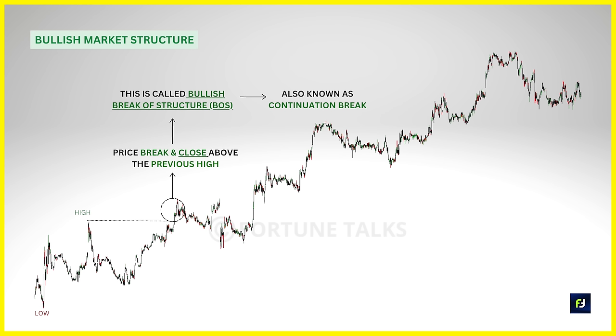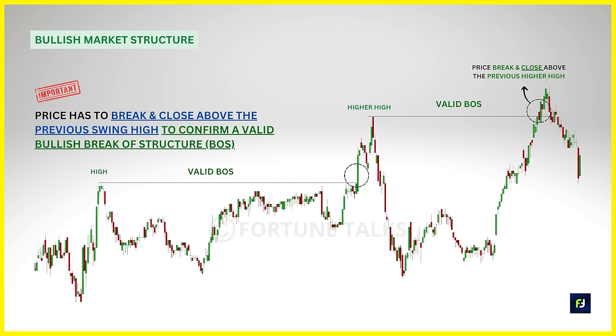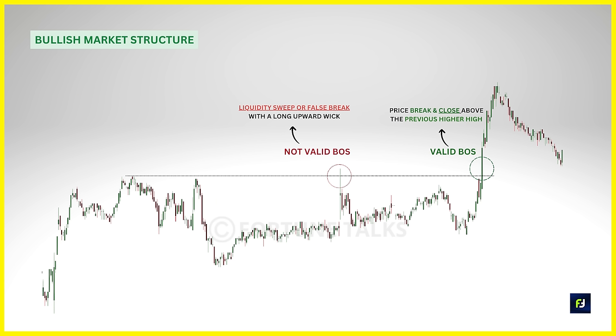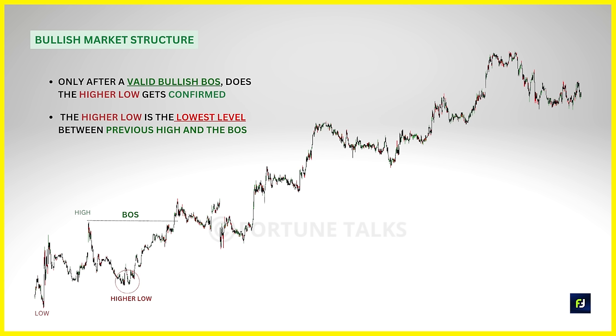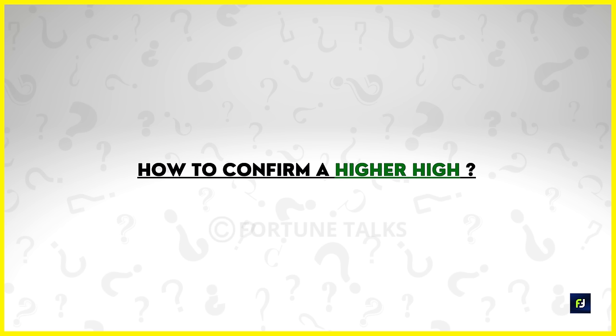When the market momentum is bullish, the market creates a low and a high, then the price makes a retracement or pullback, and once again the price moves higher and breaks and closes above the previous high. This is called a Break of Structure, or simply BOS (B-O-S). It is also called a continuation break, as the price resumes in the major trend direction. Technically, a bullish BOS happens when the price breaks and closes above the previous swing high or higher high. A close above is required — a liquidity sweep or false breakout with a long wick does not qualify.